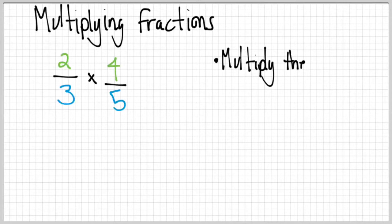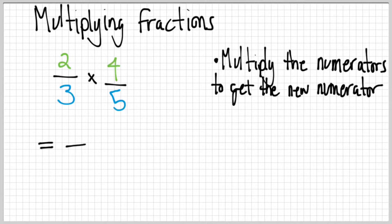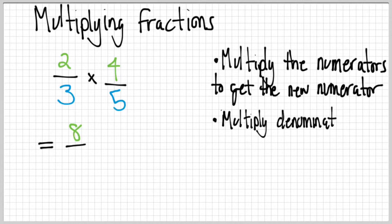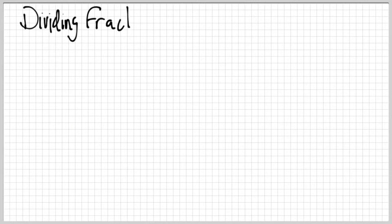Let's look at multiplying fractions — multiplying fractions is the easiest thing to do with fractions. The first step: multiply the numerators to get a new numerator. So two times four is eight. Next step: multiply the denominators to get a new denominator. Three times five is fifteen. So two-thirds times four-fifths is eight-fifteenths — and we're done.